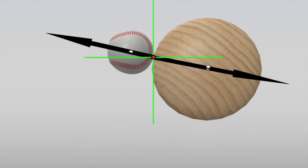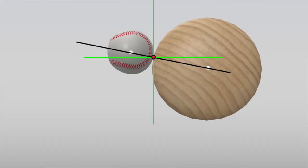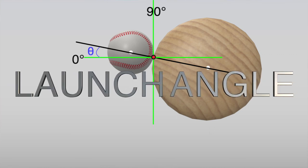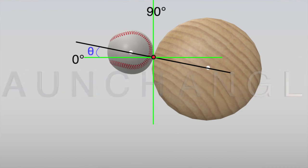At the point of impact, let's add an x and y axis. If we consider the x axis as zero degrees and the y axis as 90 degrees, then the angle indicated here — let's use theta — is the launch angle. Depending on where the ball is going to be, the launch angle is going to be different.